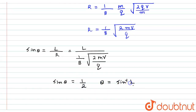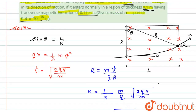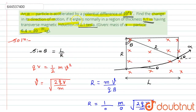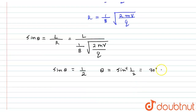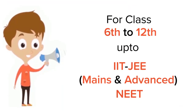Since sin theta = 1/2, theta = sin⁻¹(1/2) = 30°. This means the particle changes its direction of motion by 30°. This is the required answer for this question. I hope you liked the solution.